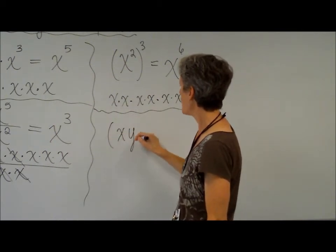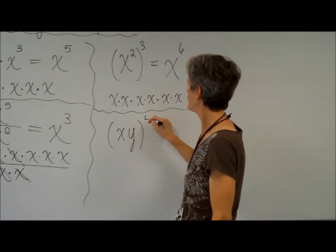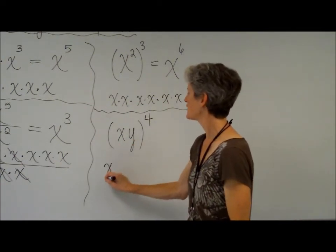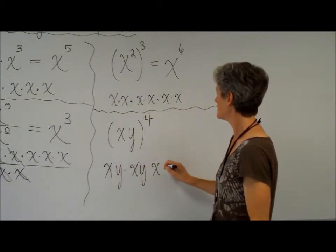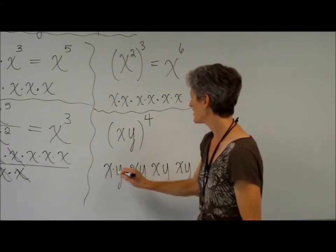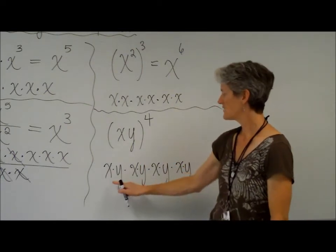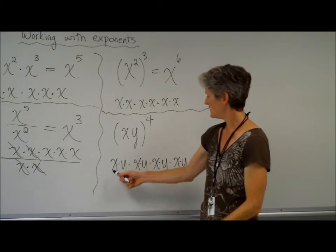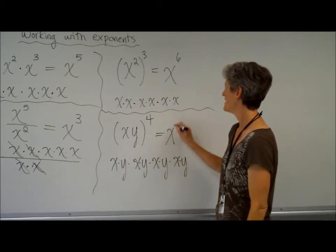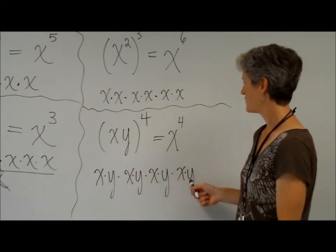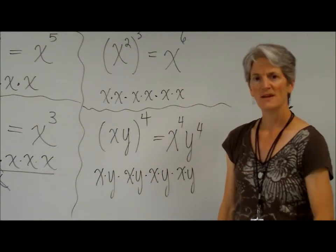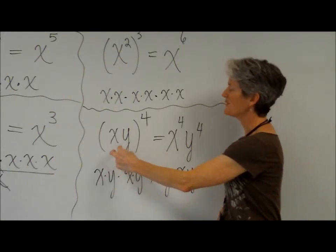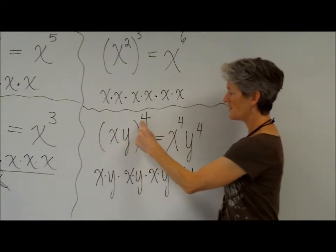What if I have x times y raised to the fourth power? That means x times y times x times y times x times y times x times y — there's an invisible multiplication between all of these. Let's multiply the x's together: x times x times x times x, that's x to the fourth. And y times y times y times y — that's y to the fourth. So the rule is: we're raising each variable to that power.